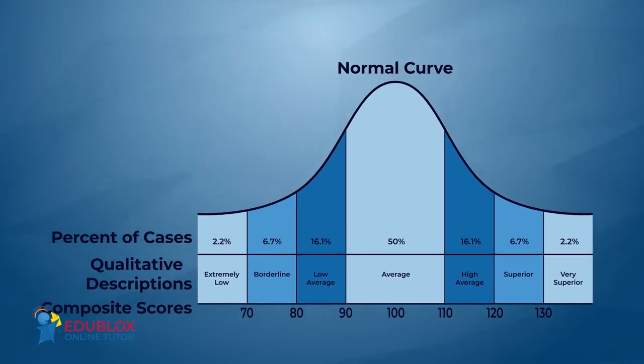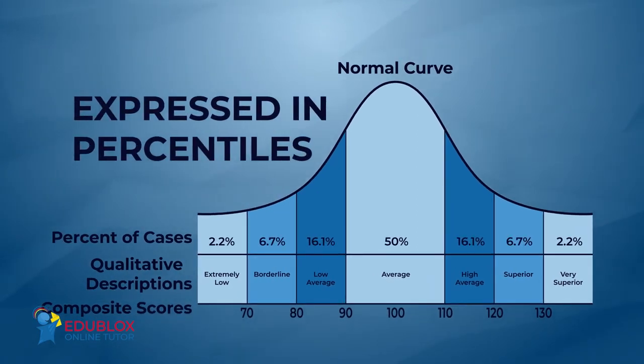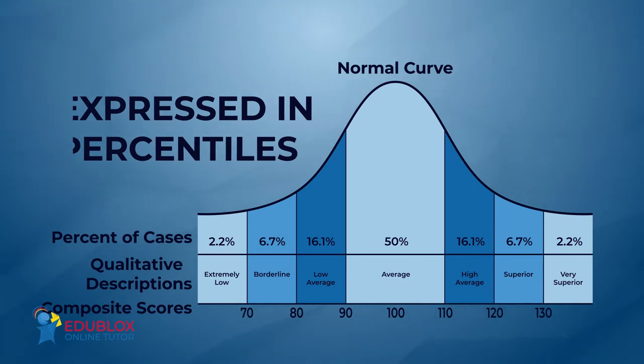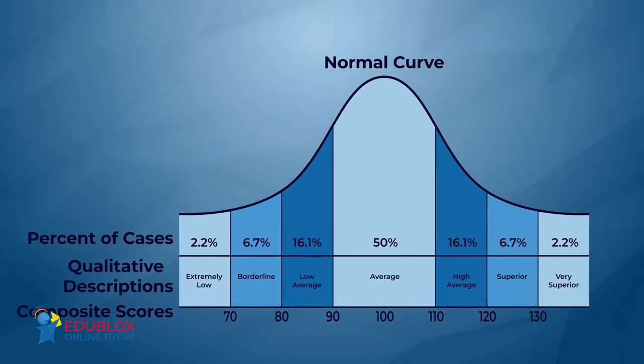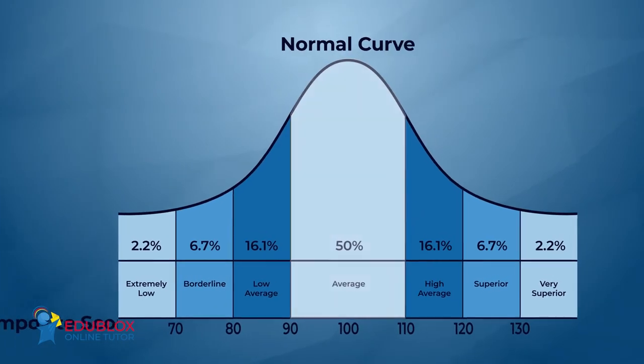IQ test scores are often expressed in percentiles. Percentile refers to the number of other test taker scores that an individual score equals or exceeds. On most standardized tests, an IQ of 100 is in the 50th percentile.